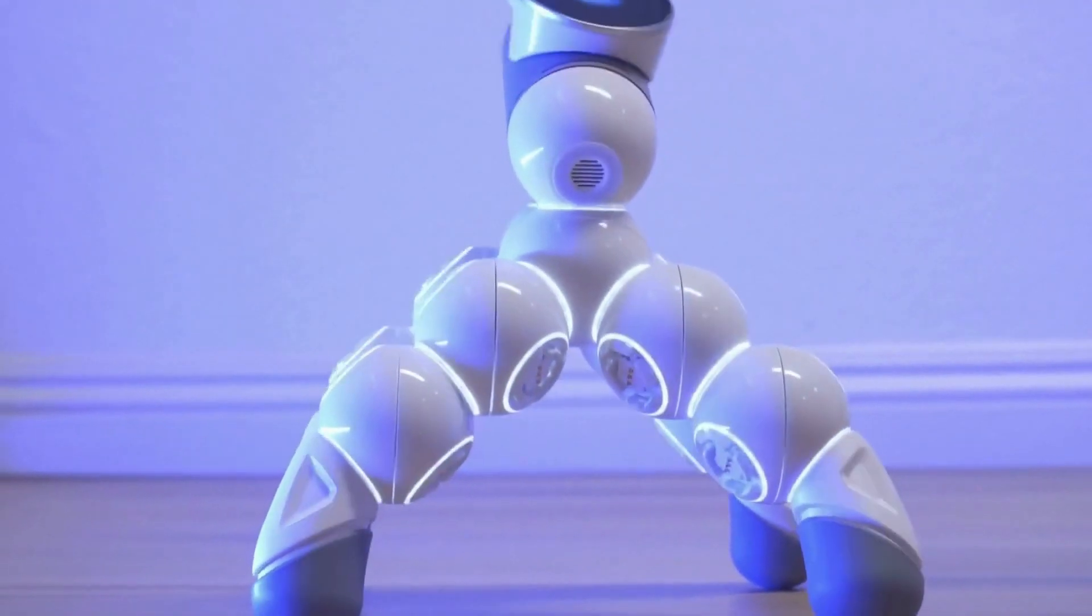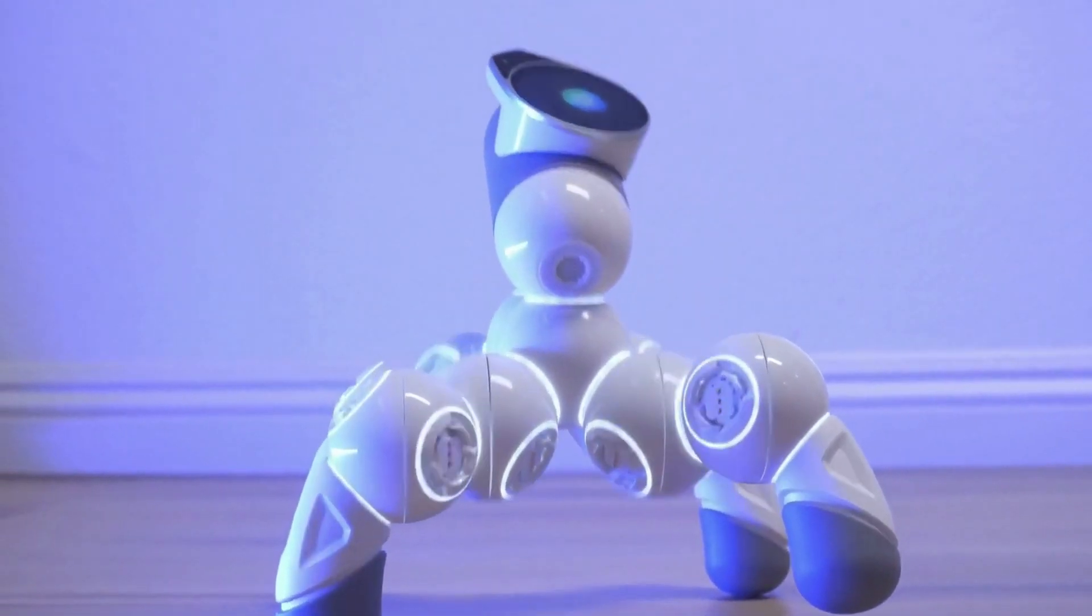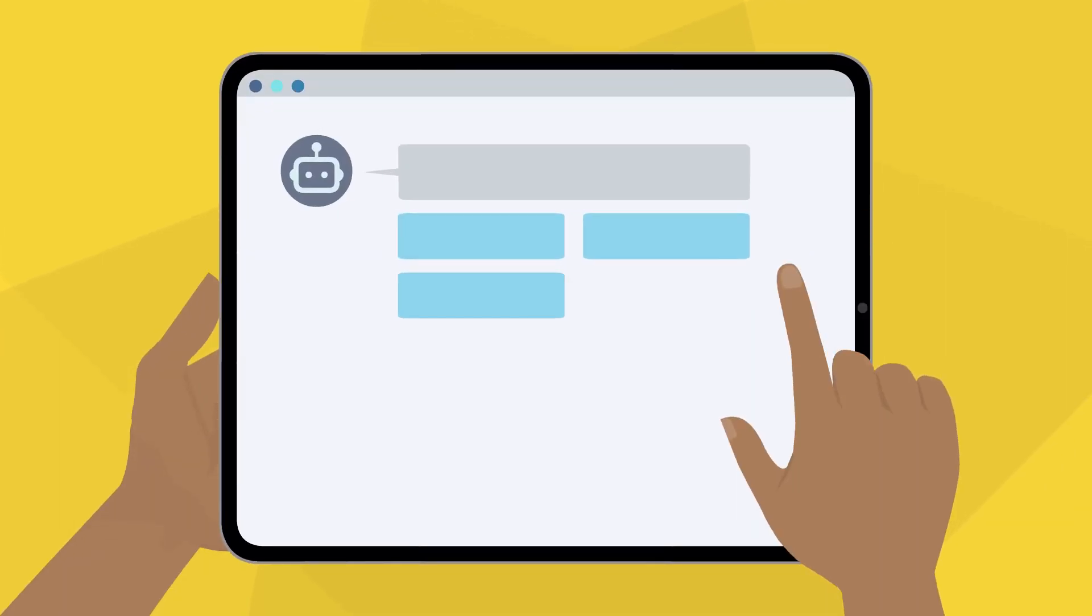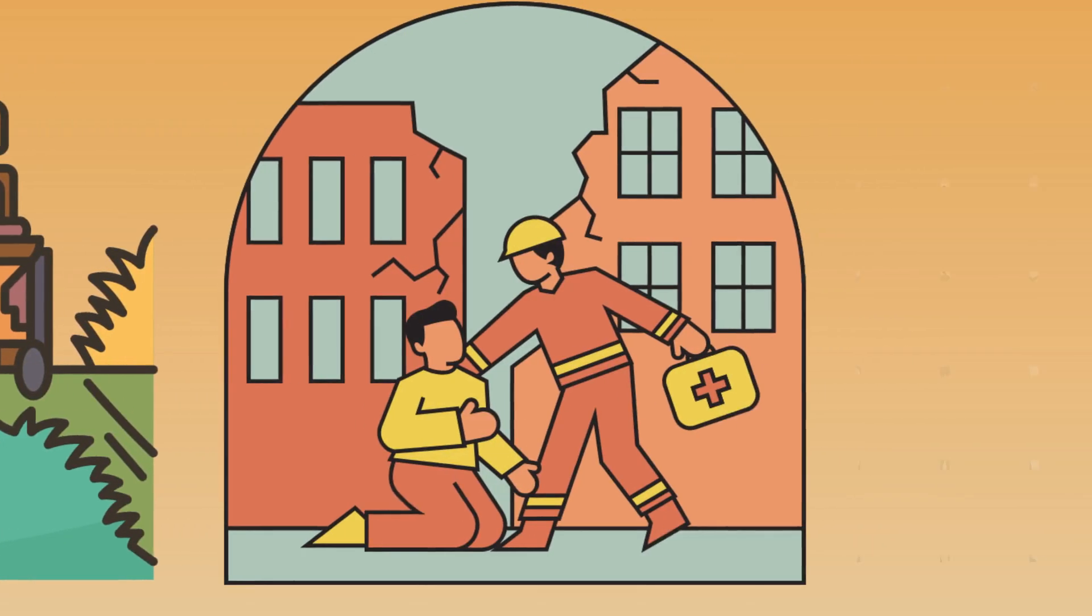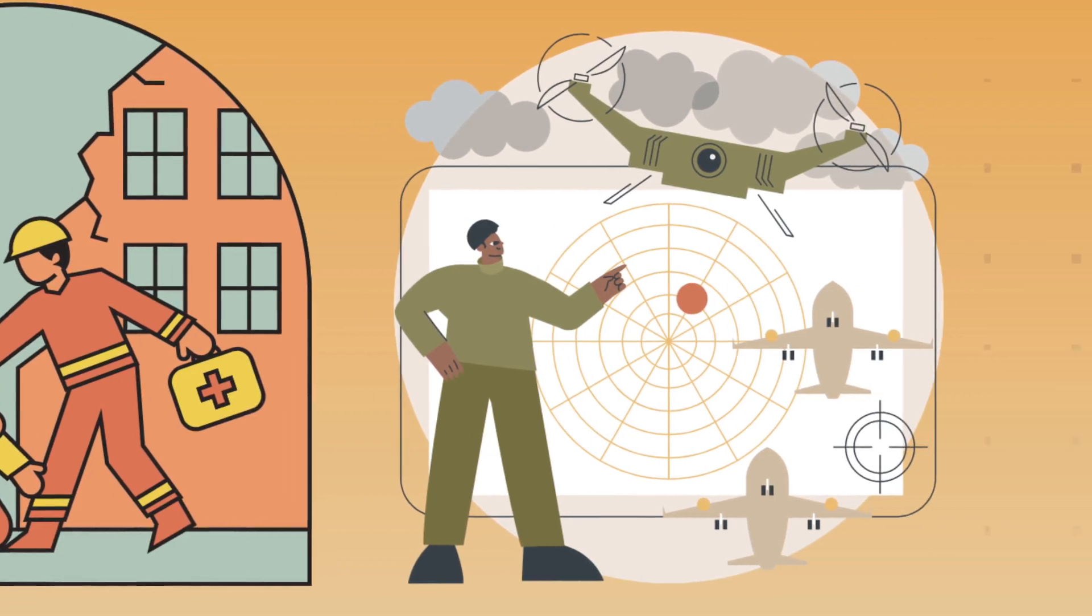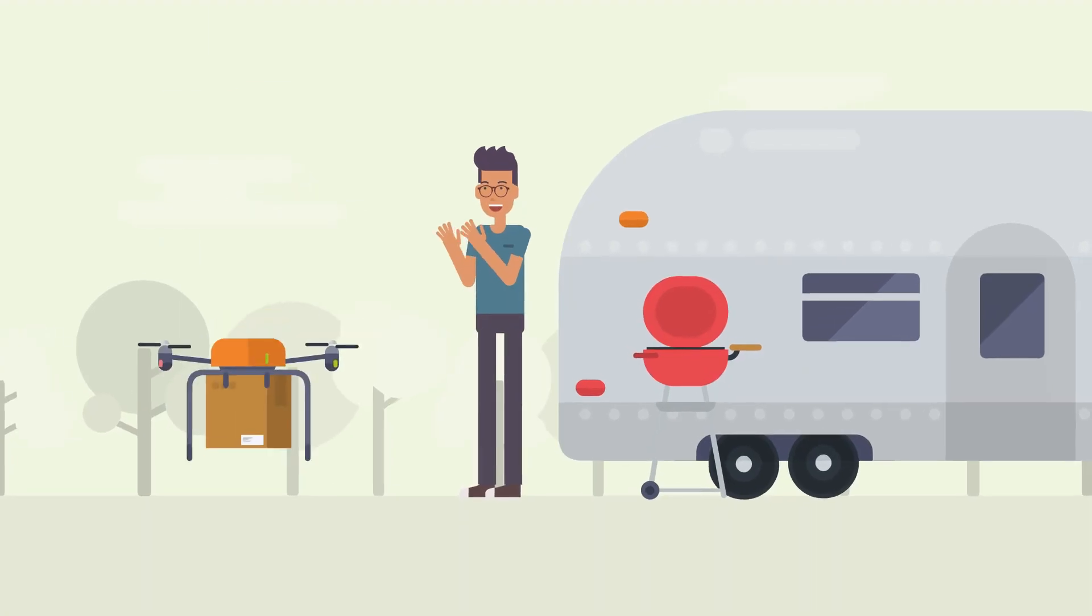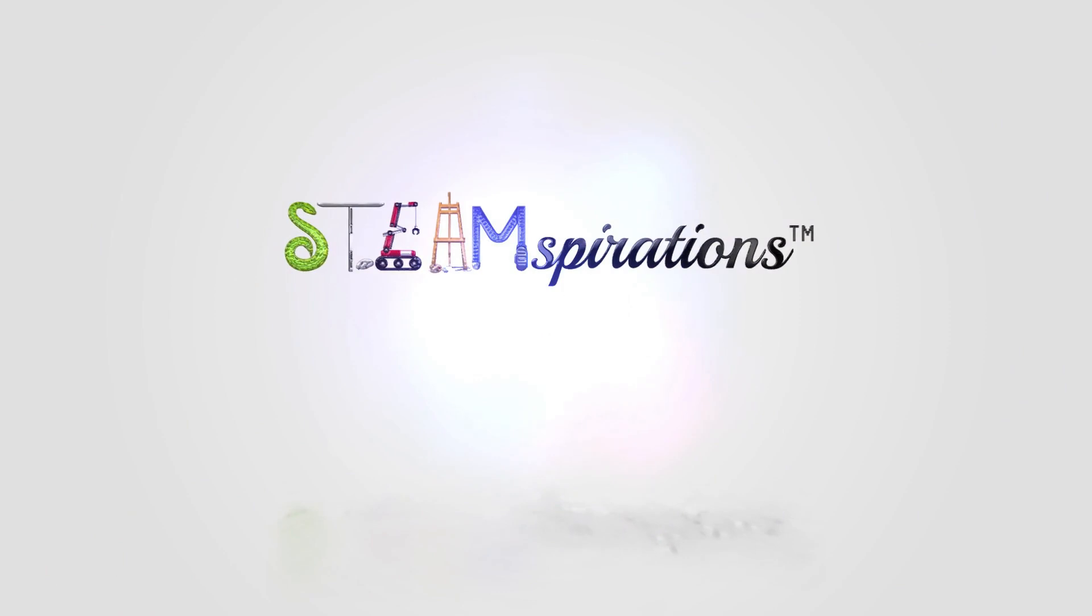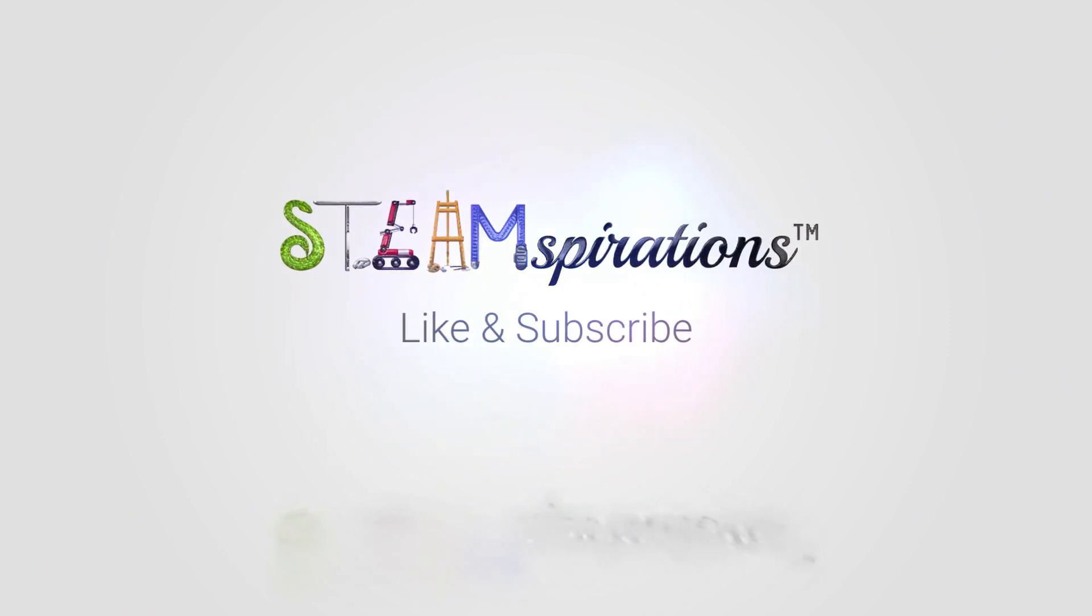In conclusion, swarm robotics is an exciting and rapidly evolving field with limitless possibilities. As technology continues to advance, the potential applications of swarm robotics will undoubtedly expand, impacting industries ranging from agriculture and search and rescue missions to military operations and space exploration. By harnessing the power of swarming behavior, we can unlock new ways to solve complex problems and revolutionize the way we live and work. Share your thoughts on how swarm robotics will impact the world in the comment section below. And don't forget to like and subscribe to stay updated on the latest developments.